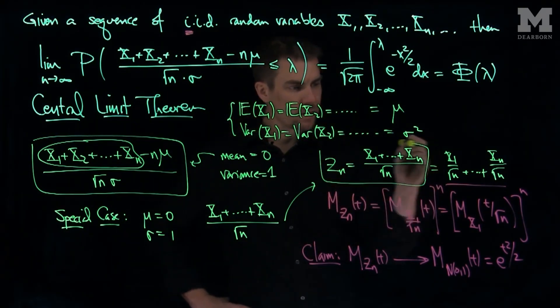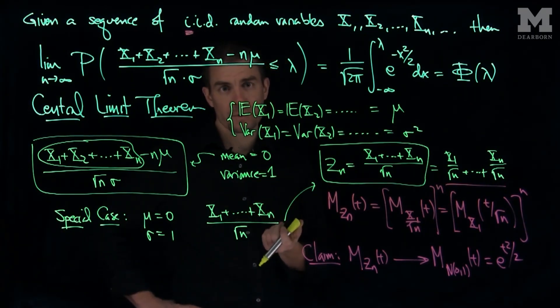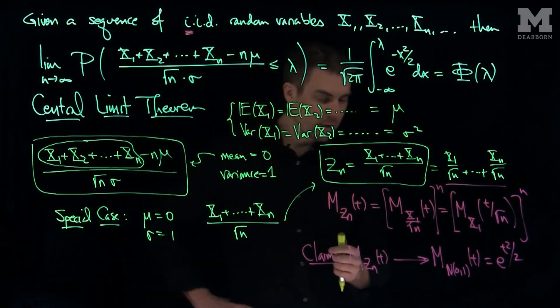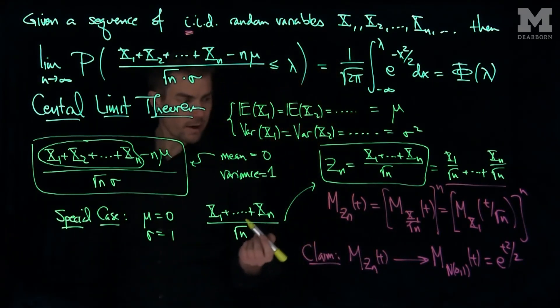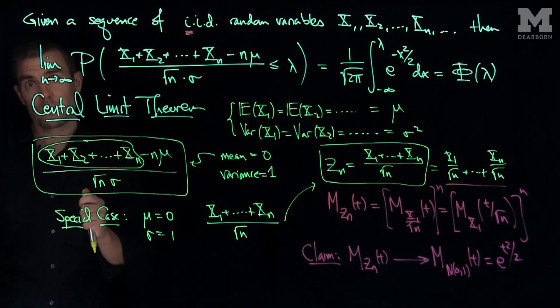Is that you consider the normalized sequence where you have mean 0 and variance 1, and you consider the moment generating functions of that expression and you show, using L'Hopital's rule, that these moment generating functions converge. And if the moment generating functions converge, then the cumulative distribution functions will converge as well.